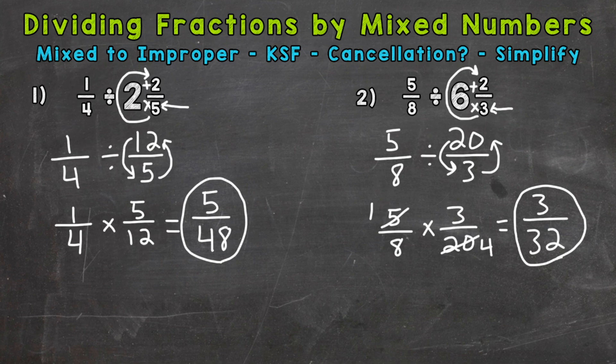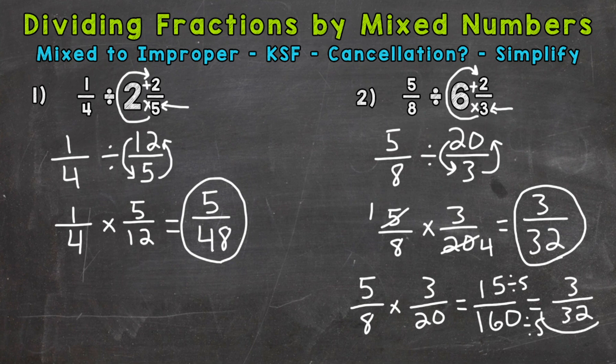I do want to show you what would happen if we didn't use cancellation. You would get to the same correct answer. If you're not using cancellation, that's okay. You use the same steps. Let me write it out here. Five times three is fifteen. Eight times twenty is one hundred sixty. Then we would have to simplify that, because fifteen and one hundred sixty has a greatest common factor of five. We would end up with three over thirty-two. So we got to the same answer, we just had to simplify more at the end rather than simplifying before multiplying straight across. There's how you divide fractions by mixed numbers.